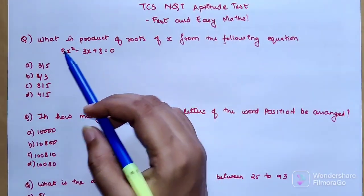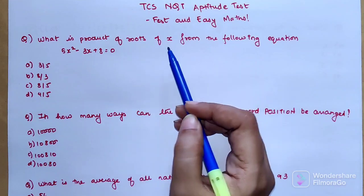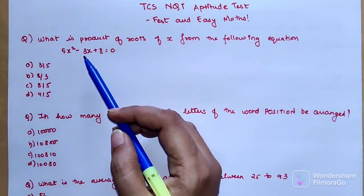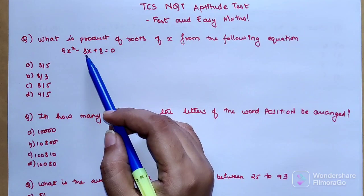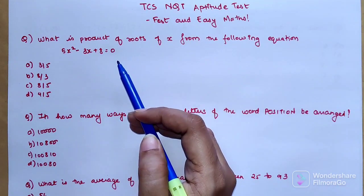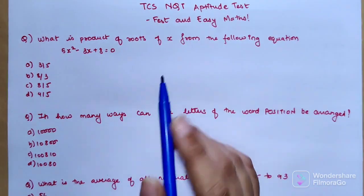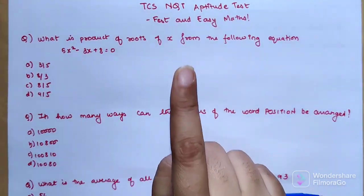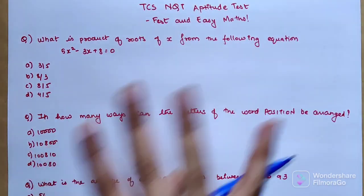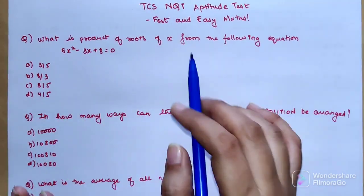The first question is: what is the product of roots from the following equation, 5x² - 3x + 8 = 0? Please understand, for this particular question you will solve it in one second. You do not have to find the actual roots.